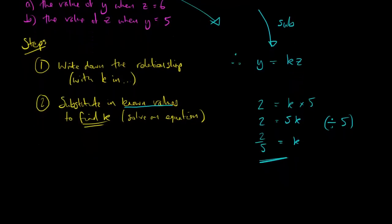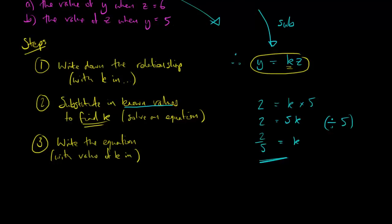Now, what am I going to do with this? Well, step three is simply to write out the equation. And the equation that links y and z is basically the relationship that you've already written down, except now I know what k is. So, y is equal to k times z. But I now know that k is 2 fifths. So, I replace k with its value. And I can write the equation as y is equal to 2 fifths times z. Or just 2 fifths z.